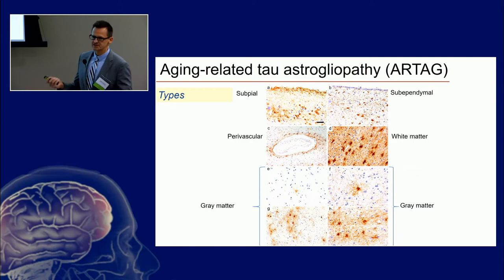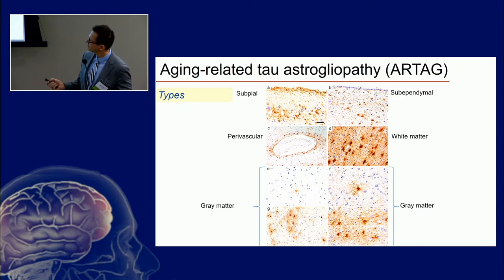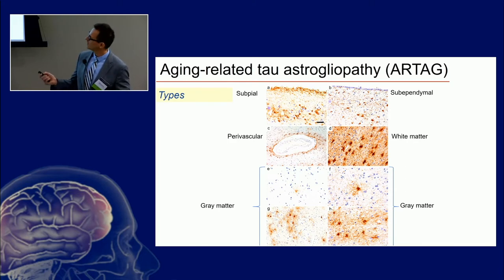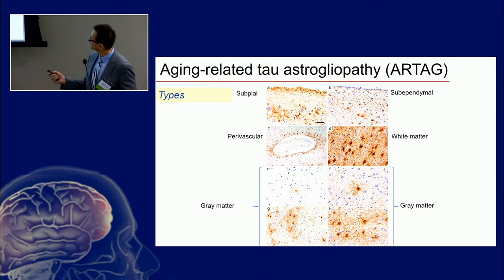Where do we see these morphologies? You can see them in the subpial area, in the subependymal area, in the perivascular area, in the white matter, and also in the gray matter. Obviously, these locations associate our thoughts with the blood-brain barrier, and in the white matter they accumulate close to vessels.